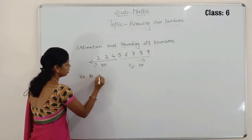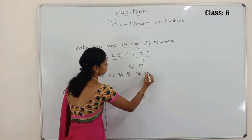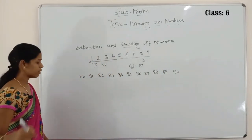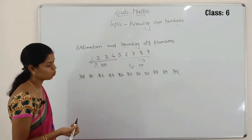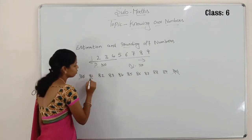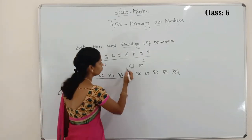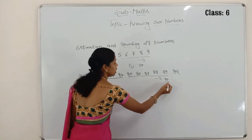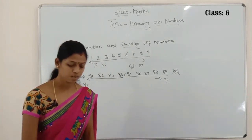See the numbers: 80, 81, 82, 83, 84, 85, 86, 87, 88, 89 and 90. Here 80 is a round number and 90 is also a rounding number. For 81, which is the nearest number? Since 1, 2, 3, 4 come to the previous ten — 81 rounds to 80. From 5, 6, 7, 8, and 9, the numbers round up to 90. You have to divide and round the numbers like that. Understood, children?